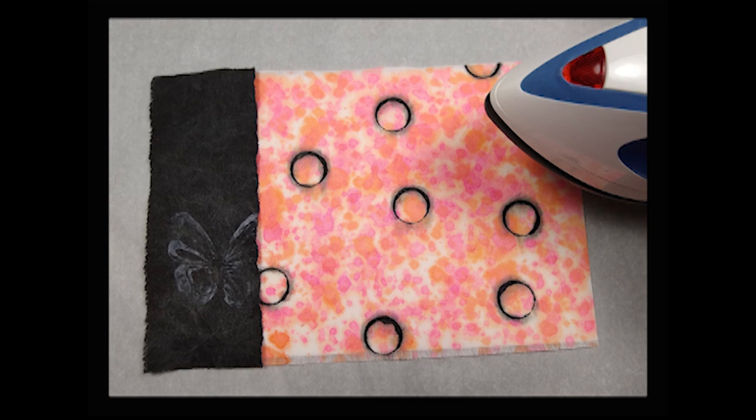I cut the splash fabric so that it was just a little bit longer than the black, the black was on top, and then I cut a little strip of Wonder Under and placed it under the black on top of the splash fabric, so that it would just hold that black edge down where the butterfly is.